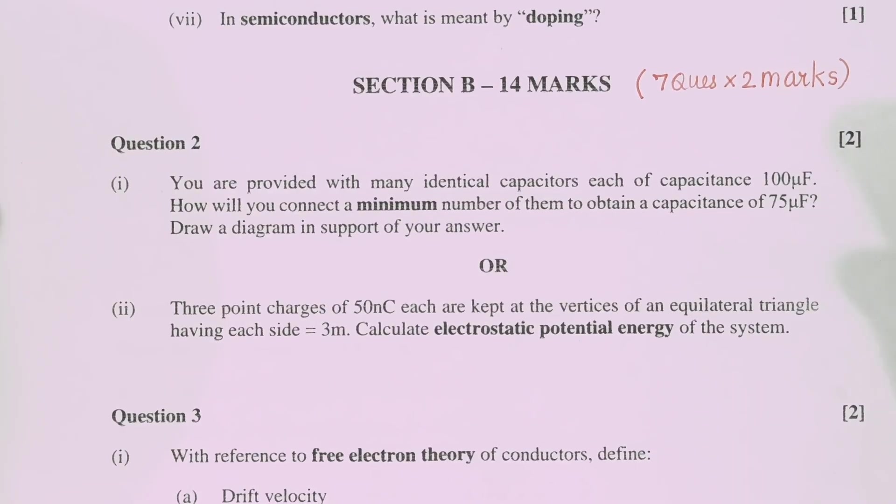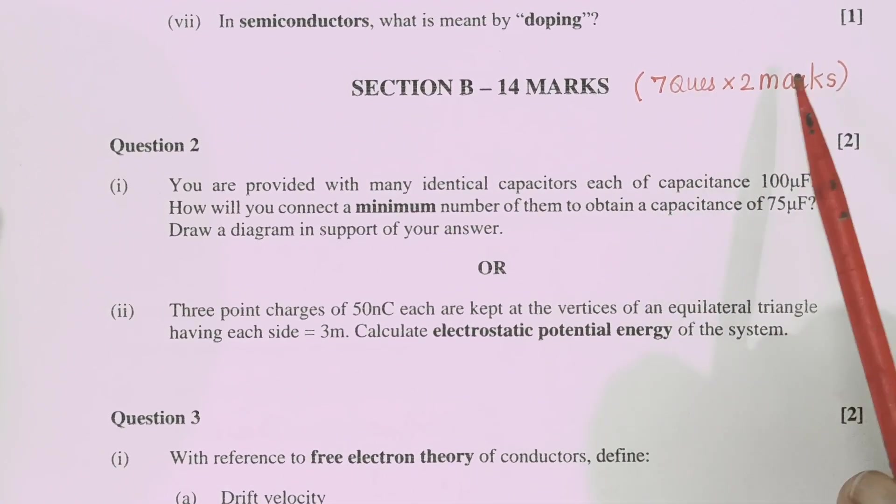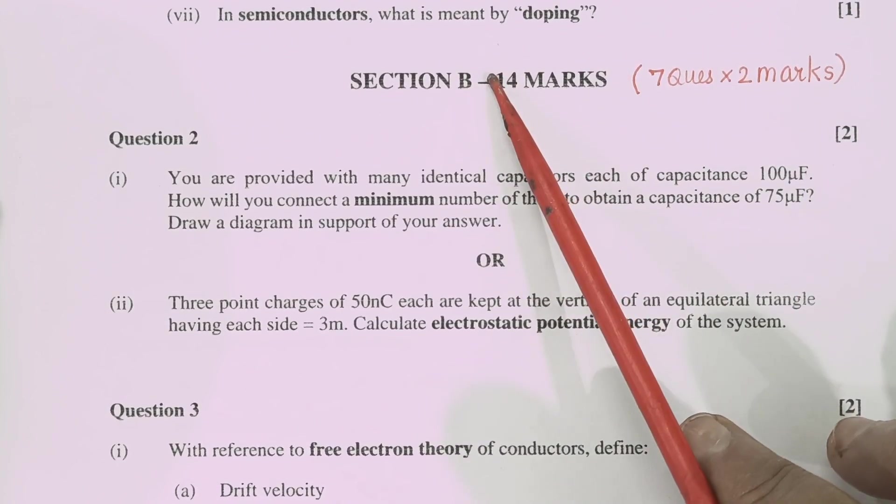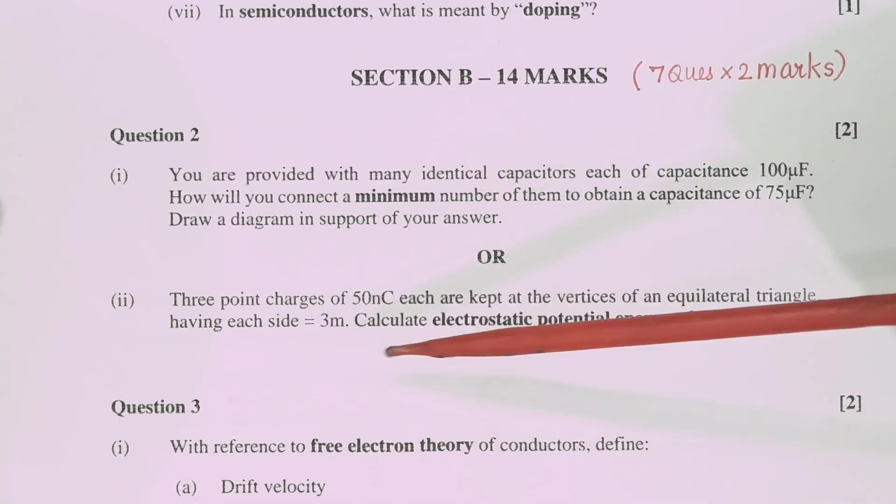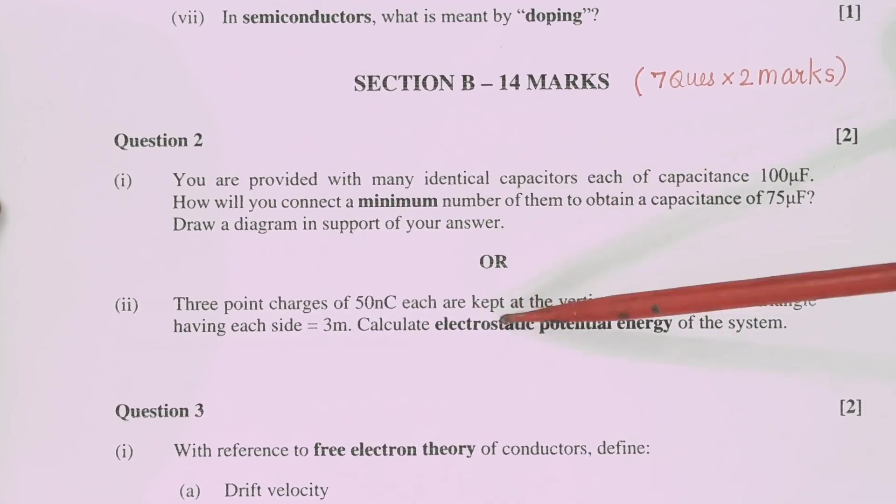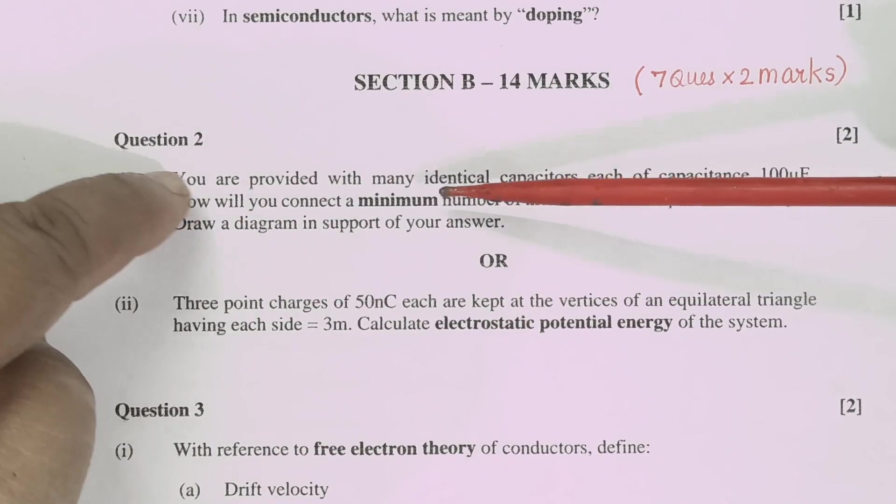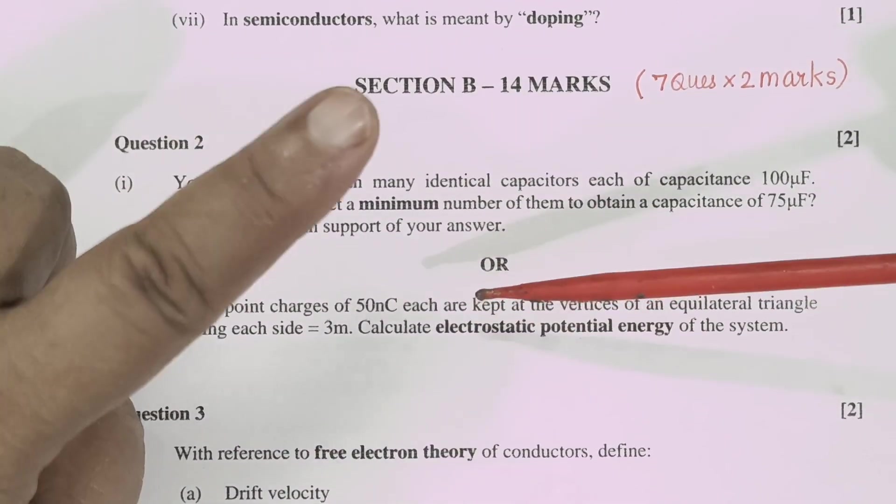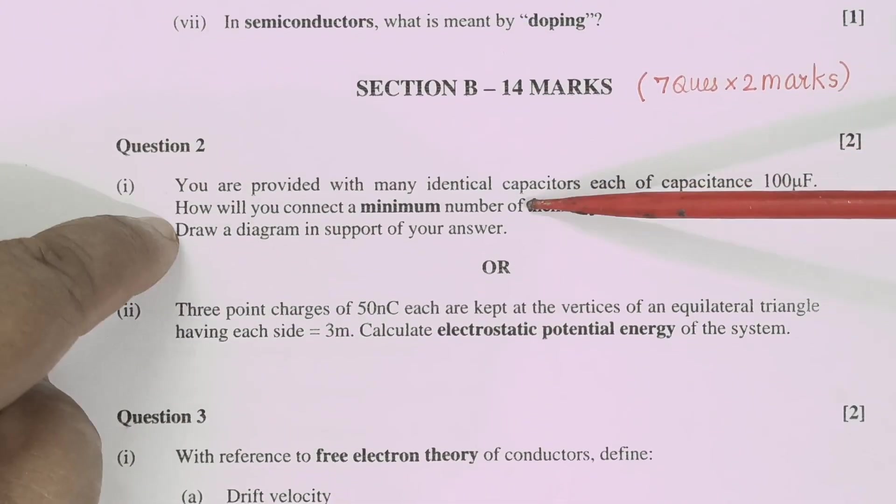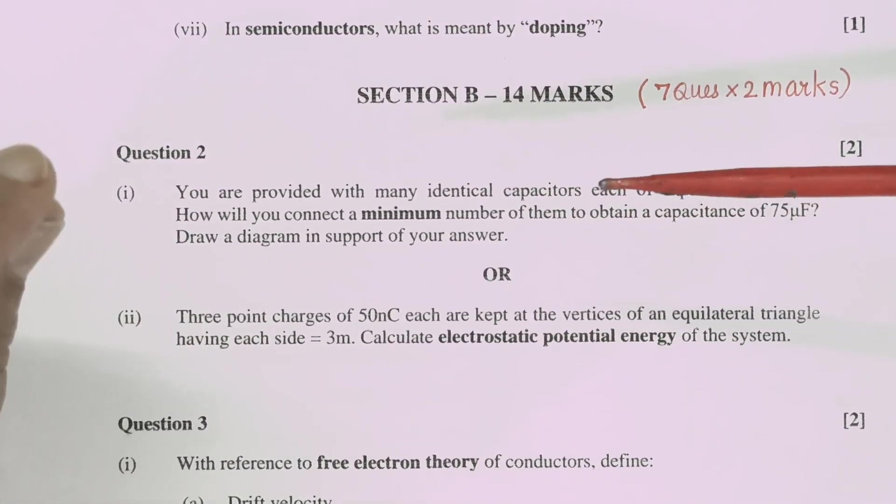Now let us see section B. Section B is of 14 marks. 7 questions and each question carries 2 marks. So 7 into 2, 14 marks. Now observe here in this section you will have options. You will have choice in 2 questions. But both the questions will be of same topic. For example here 2 marks question that means there will be short answer type questions.